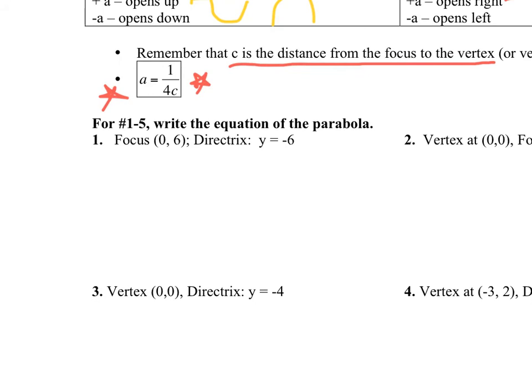Number one: we're going to write the equation of the parabola. We're given two things — focus and directrix. A parabola has three things: a focus, a vertex, and a directrix. You only need two out of those three to get the equation. My suggestion is to draw a picture to see which way it opens. The focus is at zero, six.